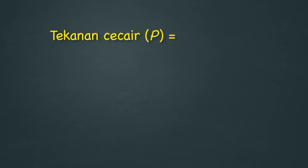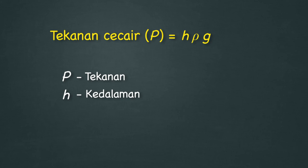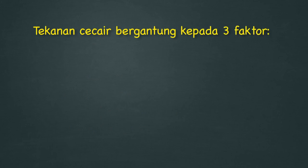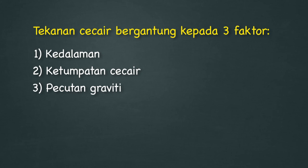Sekarang mari kita kaji formula yang melibatkan tekanan yang disebabkan oleh cecair. Tekanan cecair: P = hρg. P adalah tekanan, h adalah kedalaman, ρ (rho) adalah ketumpatan cecair, dan g adalah pecutan graviti. Berdasarkan formula tersebut, nilai tekanan di dalam cecair bergantung kepada tiga faktor iaitu kedalaman, ketumpatan cecair, dan pecutan graviti.